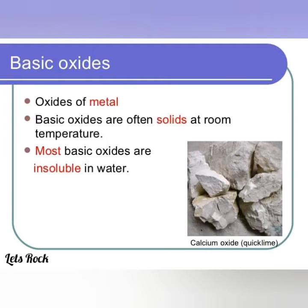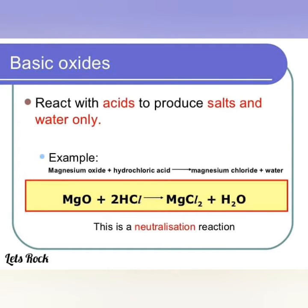Basic oxides are oxides of metals. They are often solids at room temperature, and most basic oxides are insoluble in water — for example, calcium oxide (quicklime). Basic oxides react with acids to produce salts and water only. For example, magnesium oxide plus hydrochloric acid gives magnesium chloride plus water: MgO + 2HCl → MgCl₂ + H₂O. This is a neutralization reaction.